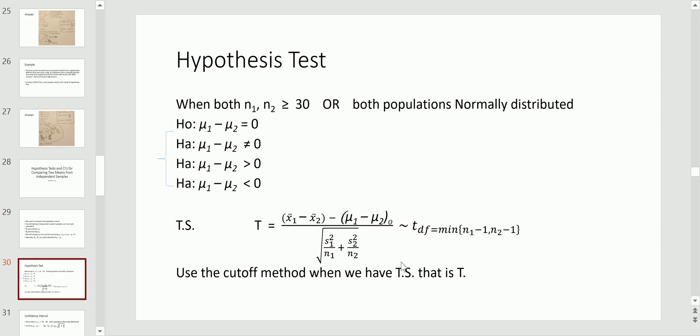Now, in execution, when we conduct the hypothesis test, there's a couple things you need to look out for with the technique that I'm showing you here today. The method I'm showing you today, you need both sample sizes to be at least 30, or both populations to be normally distributed, or some combination of the two.